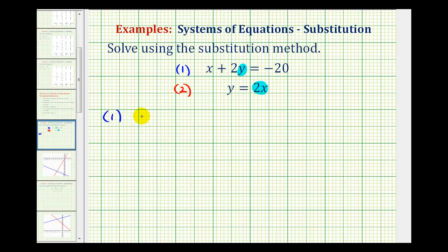So equation one would be x plus, instead of two times y, we'll have two times 2x. Again, y is equal to 2x, and then we'll have equals negative 20. Notice how the equation now only contains one variable.